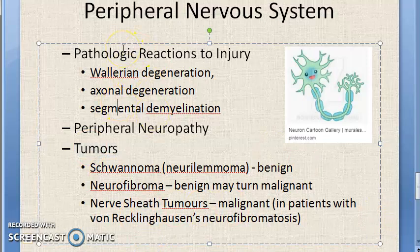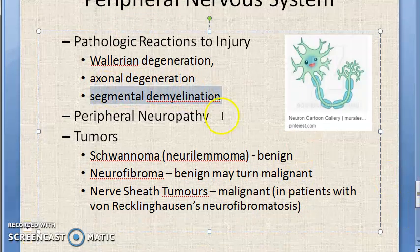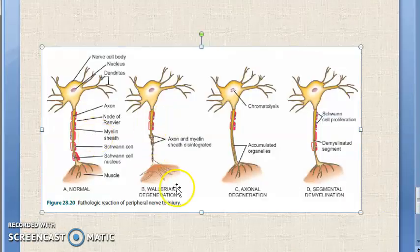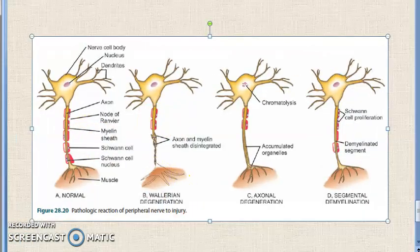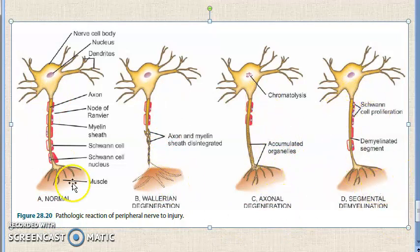In peripheral nerves, if there is injury, unlike in the brain where there is regenerative capacity, in peripheral nerves there is no regeneration capacity. What will happen is degradation — Wallerian degeneration, axonal degeneration, and segmental demyelination. Looking at the diagram, they have shown diagrammatically what happens with a normal peripheral nerve and each of these three conditions.